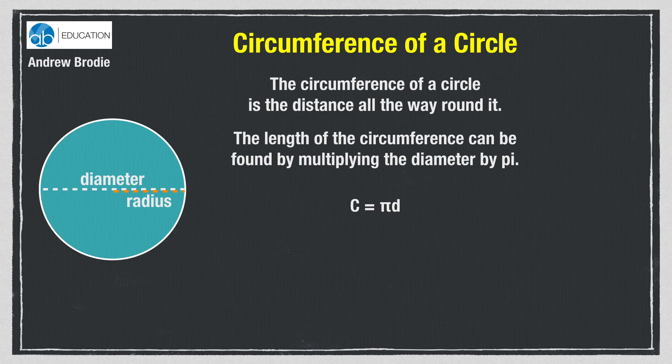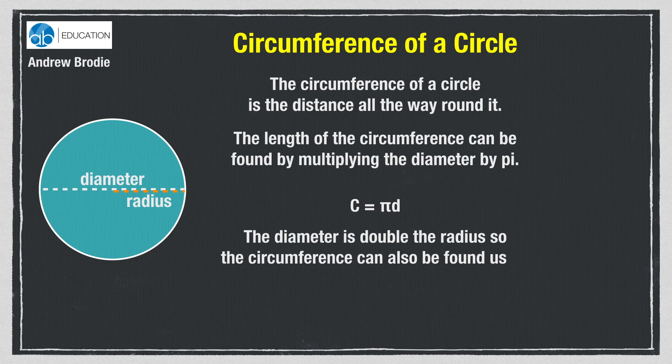The diameter is double the length of the radius, so the circumference can also be found using 2 times pi times the radius. Here's the formula: C equals 2πr.